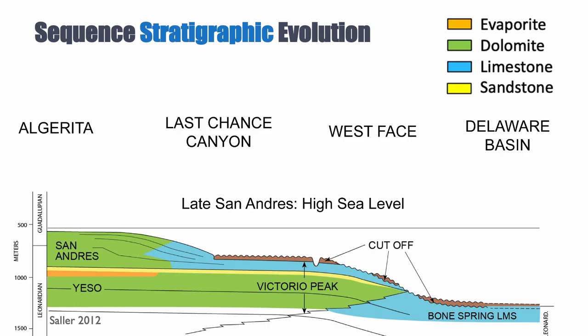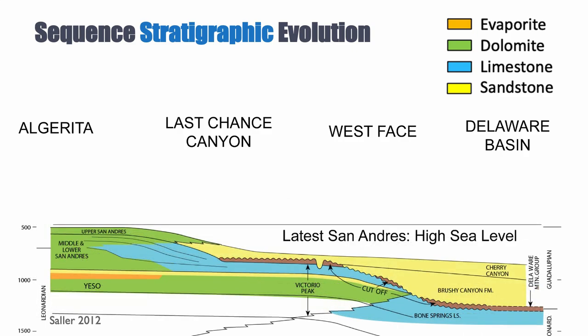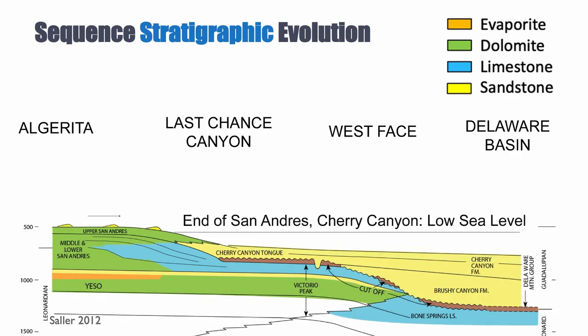After the lower San Andreas, we have evidence for a maximum flooding surface, and then the San Andreas formation starts to prograde. The production of carbonate outpaces the production of accommodation. With lower-order sea level changes, every time you have a low stand, you have accumulation of sand in the basin. The San Andreas is clearly progradational, and at its end we have a significant pile of sand deposited in the basin — one of the reservoirs in this system.